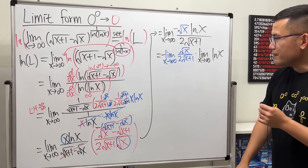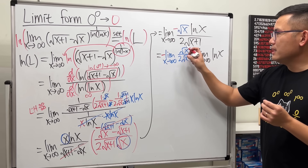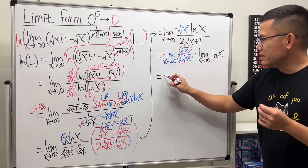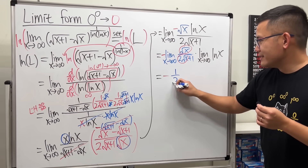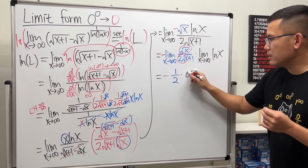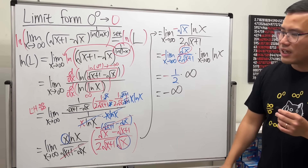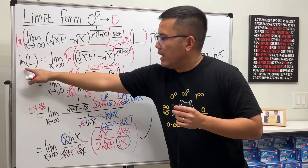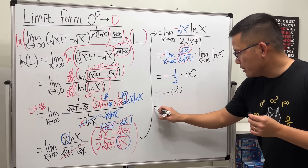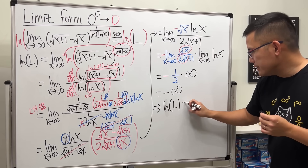So just to look again: we have negative times the first limit times ln x. For the first limit, when x is approaching infinity the plus 1 doesn't matter, so it's really just square root of x over 2 square root of x, which is 1 half. So we have negative one half. Then the limit as x approaching infinity of ln of x gives us infinity. So all together: negative 1 half times infinity gives us negative infinity.